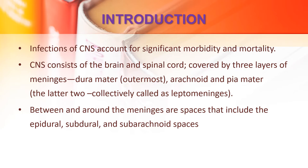Recall your understanding of anatomy classes, and it will be easy for you to understand. The CNS infections, which include meningitis, are a significant cause of morbidity and mortality. The CNS is made up of the brain and the spinal cord, and these structures are covered by three layers of membranes or the meninges: the outermost dura mater, then the arachnoid mater in the middle, and the innermost pia mater. The arachnoid and pia mater are collectively known as leptomeninges. Between them there are spaces called the epidural space, subdural space, and subarachnoid spaces.